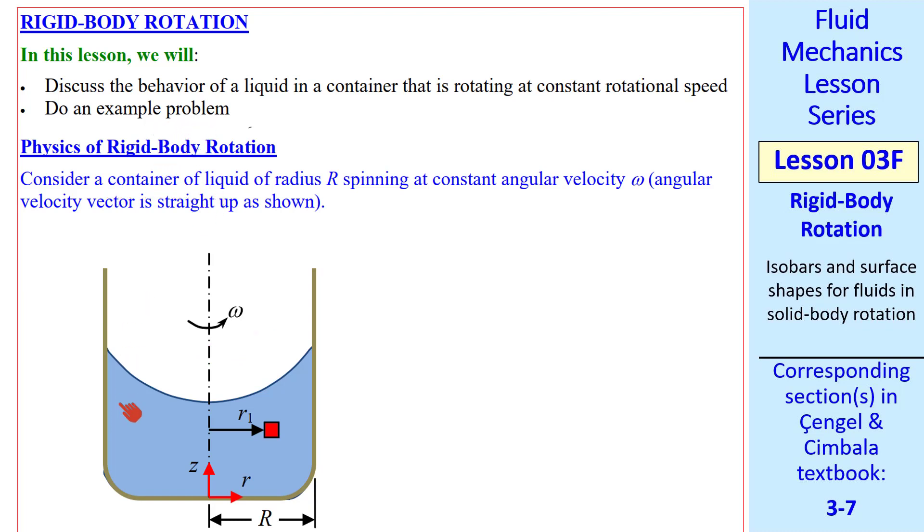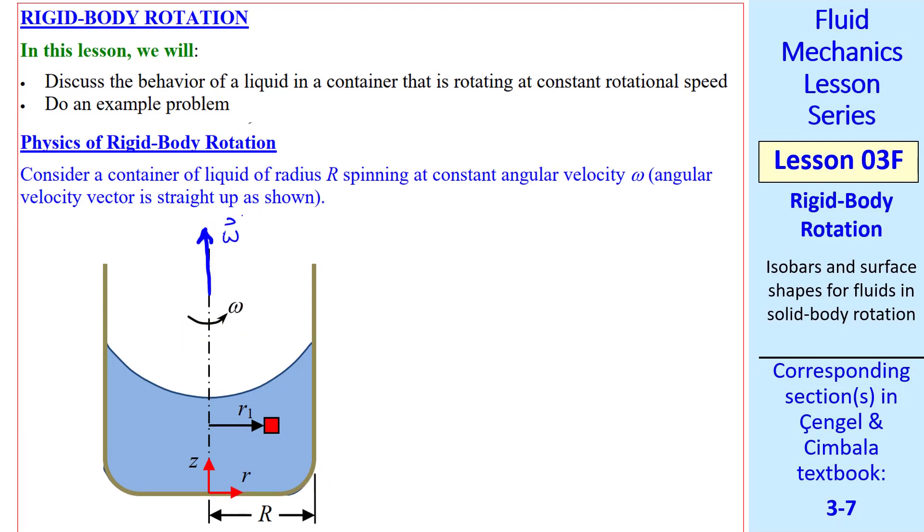First, some physics. Consider a container of liquid with radius r spinning at some constant angular velocity. The angular velocity vector is straight up in these problems, and we're rotating about the z-axis. Little r is the radius. Let's consider some small element of this fluid at radius r1.